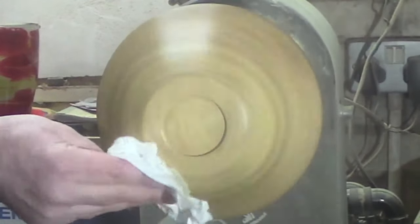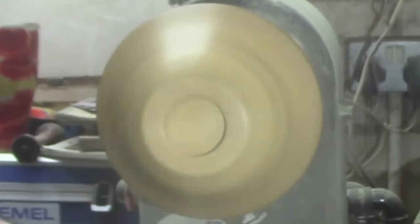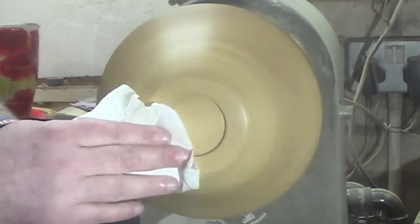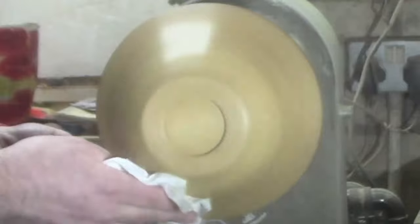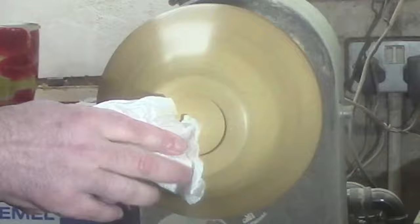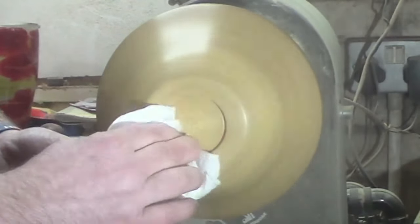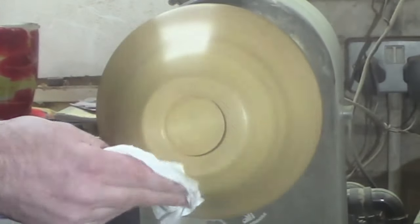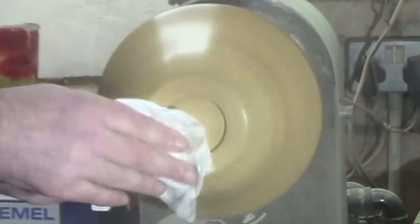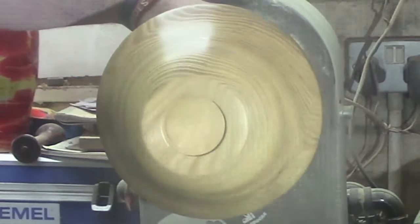And once the volatiles have evaporated, we turn the lathe up to about a thousand to twelve hundred and we buff it in, being careful not to push too hard. You don't want to wipe off any of that wax that you just put on. Build up that heat, buff it in.